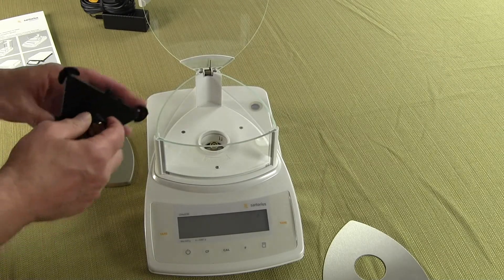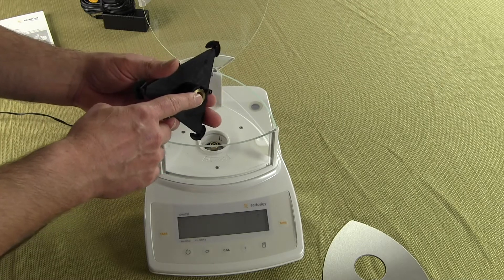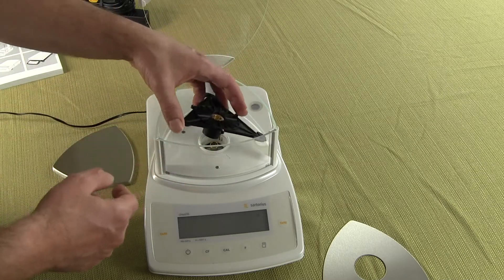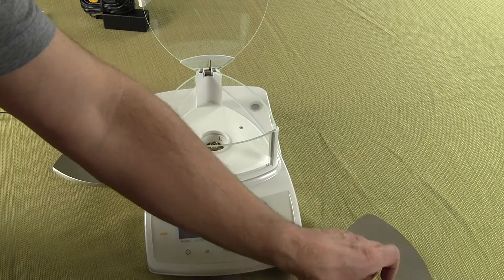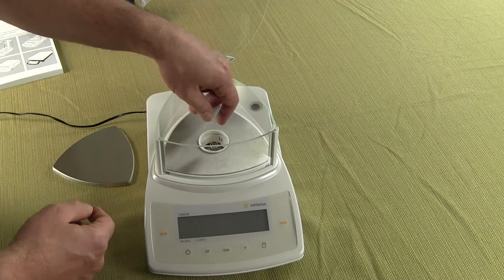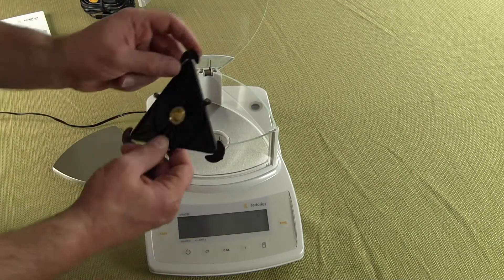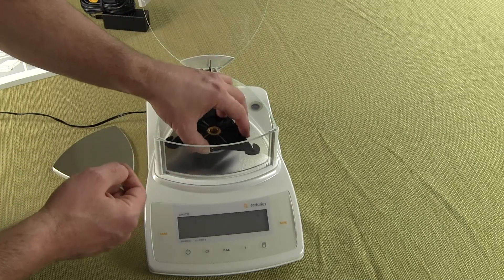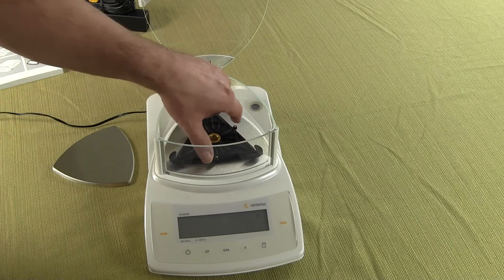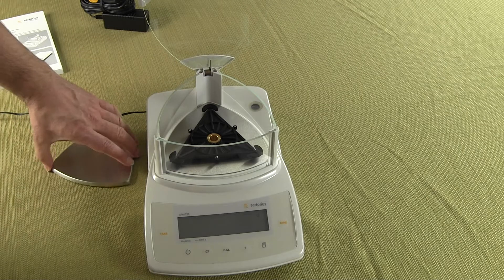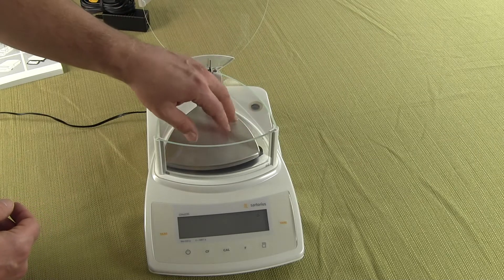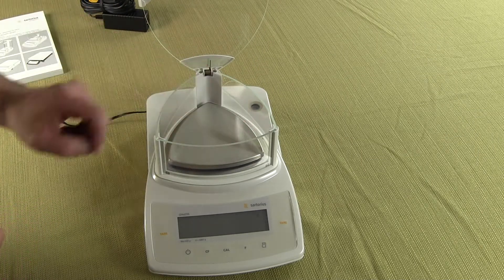The next thing we want to do is put on our pan support. You'll notice the pan support has a groove here. This groove or notch goes towards the rear of the balance. Oops, I'm sorry, before we put that on we want to put on our splash guard. So you want to install your splash guard, this just drops right in on the bottom. Now we want to put on our pan support. And the pan support just goes right on and you can see it's in place. And now we have our stainless steel pan. Stainless steel pan goes on the balance and we're all set.